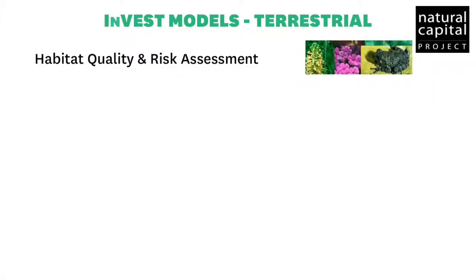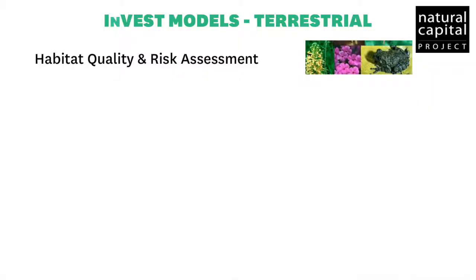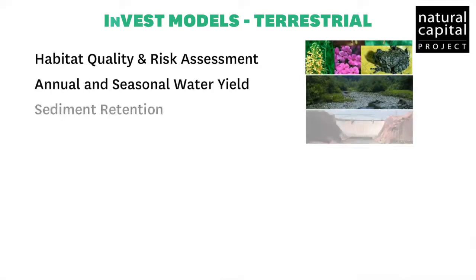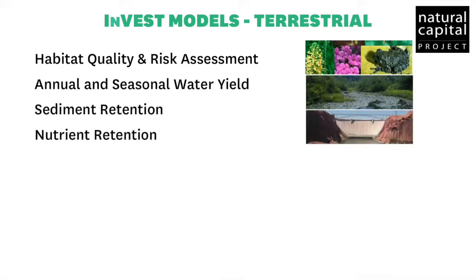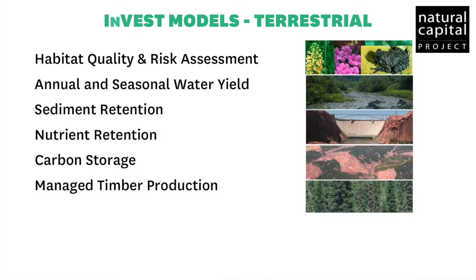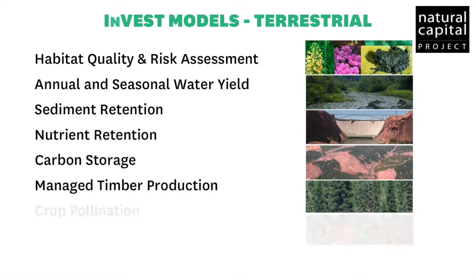The freshwater and terrestrial models are: habitat quality, annual and seasonal water yield, sediment retention, nutrient retention, carbon storage, managed timber production, crop pollination, and crop production.